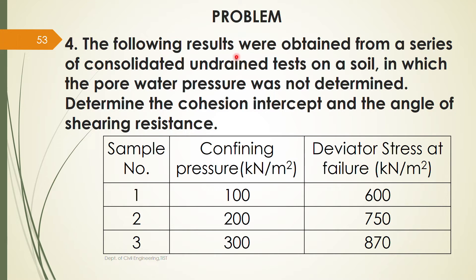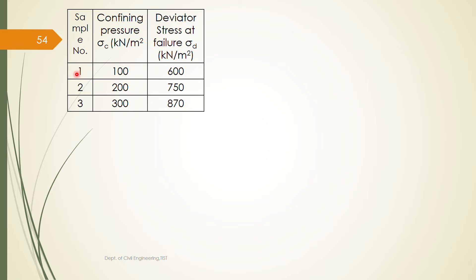Now we will do a problem. The following test results were obtained from a series of consolidated undrained tests on soil in which pore water pressure was not determined. Determine the cohesion intercept and angle of shearing resistance. Three samples are given: sample number, confining pressure σc, and deviator stress at failure σd are provided. We need to find the cohesion intercept and angle of shearing resistance using the failure envelope, which is tangential to the Mohr circle.